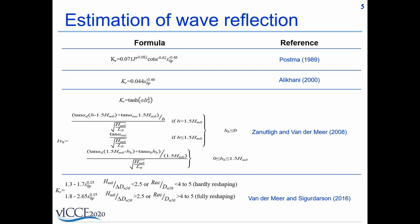One of the earliest formulas for estimating the wave reflection from coastal structure is that of Postma in 1989. It was developed for straight sloped rubble mound breakwaters with cot alpha ranging from 1.5 to 6 with core materials of varying permeability.